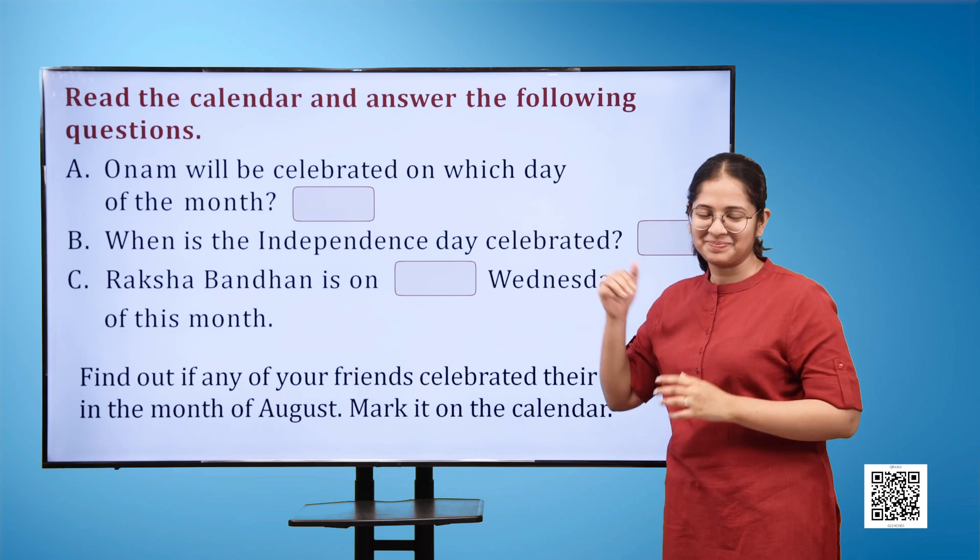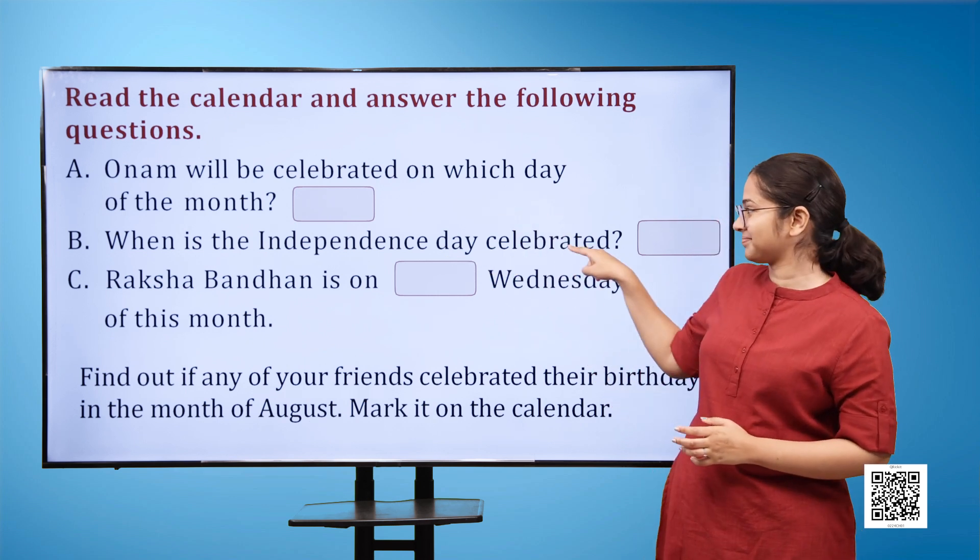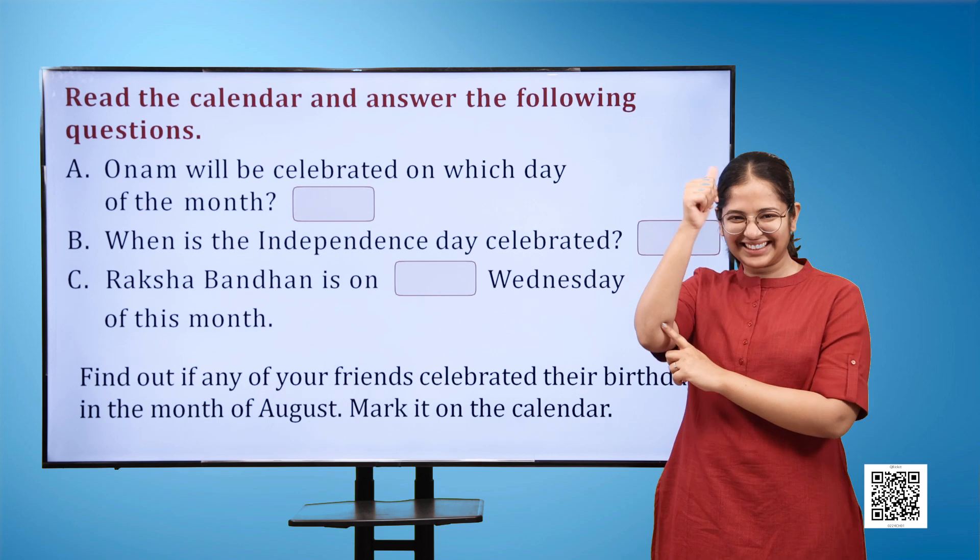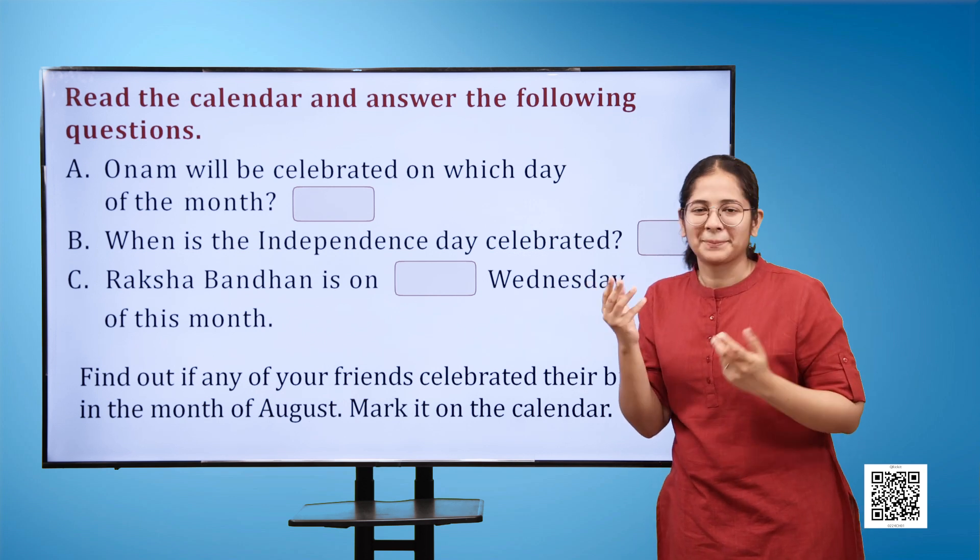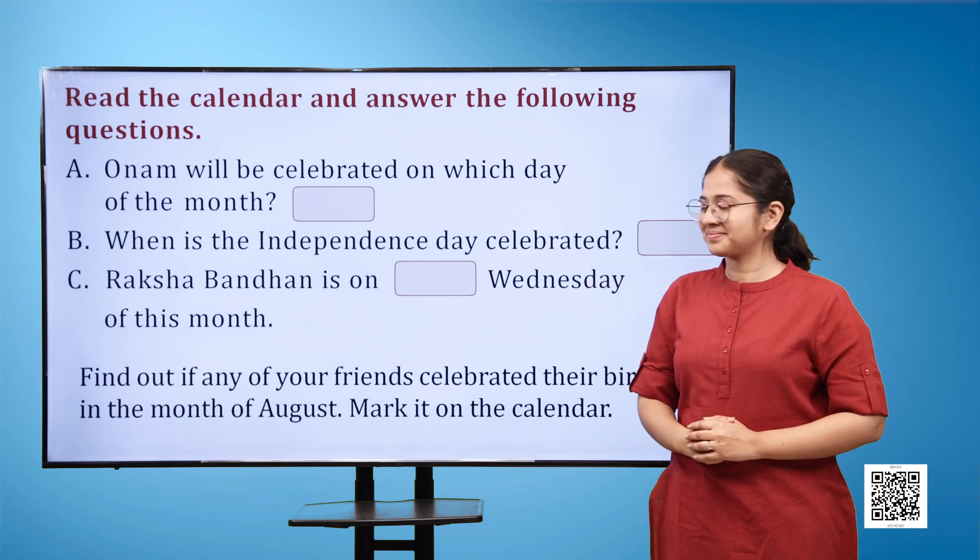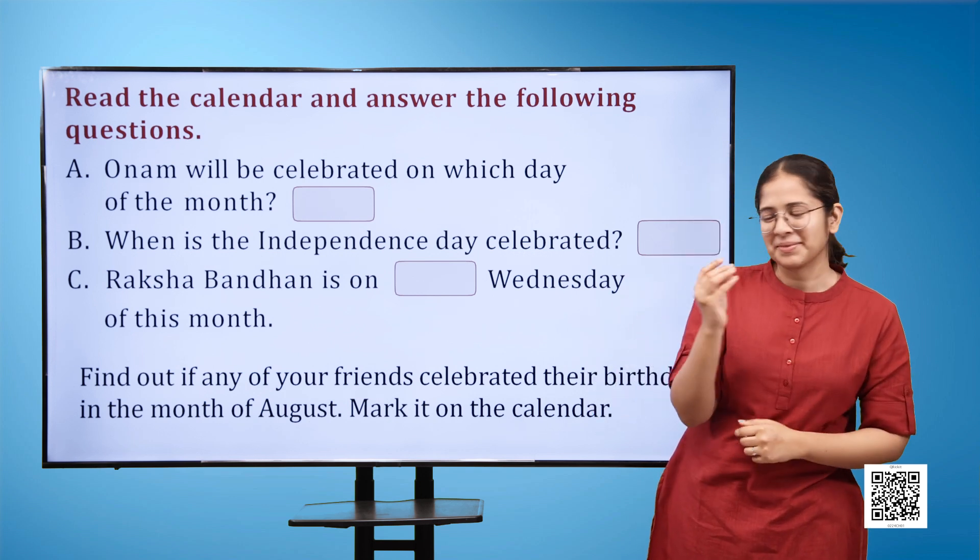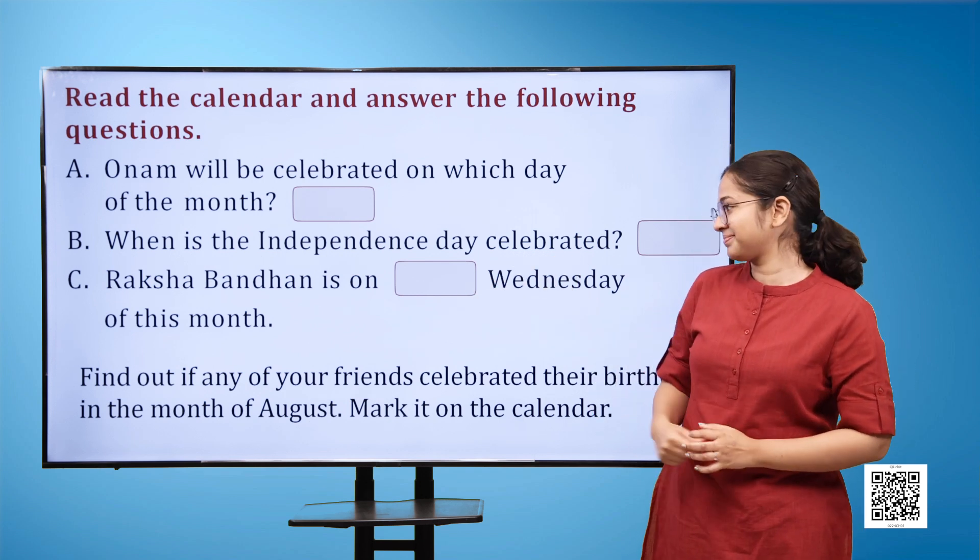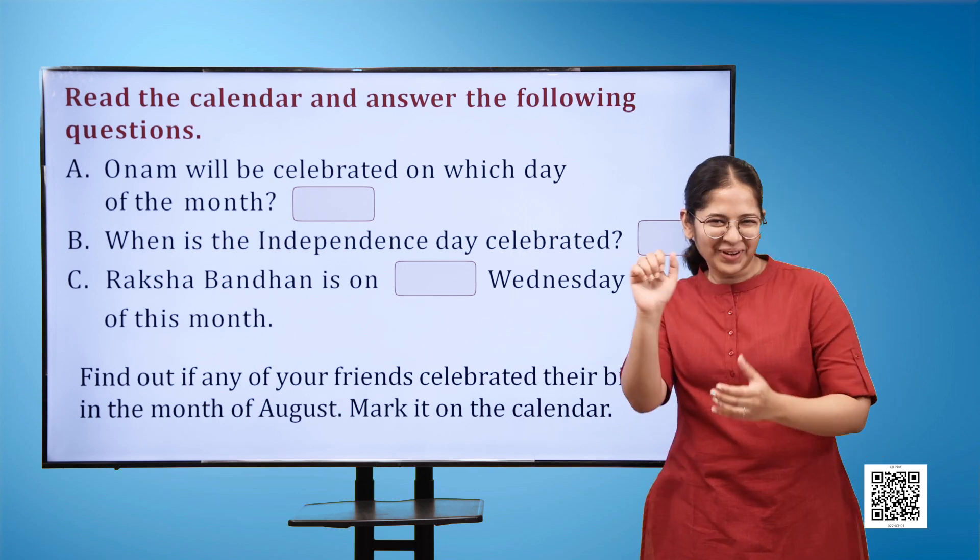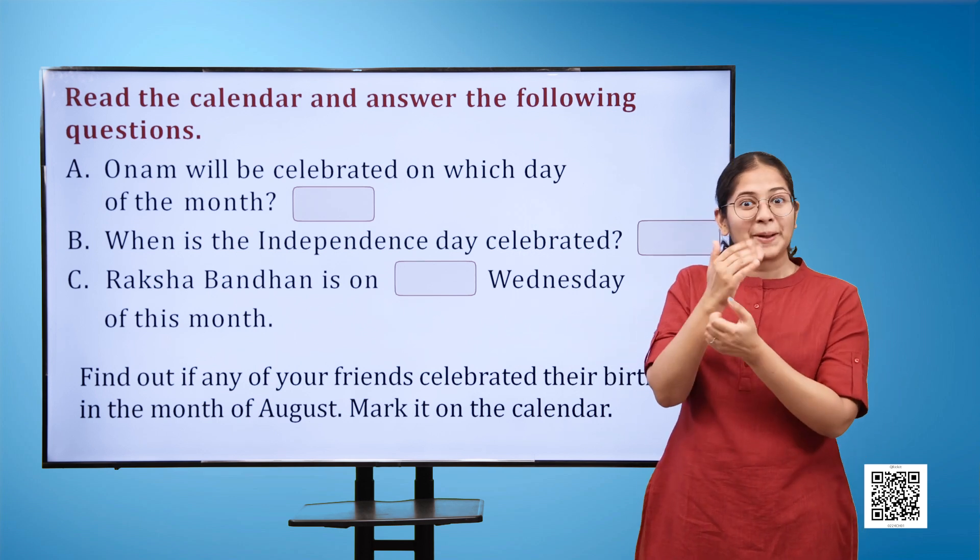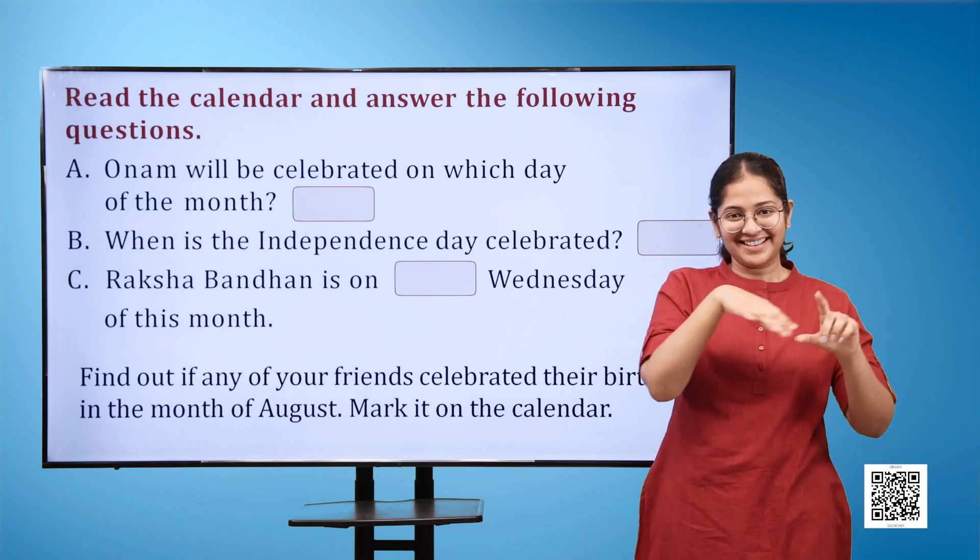Read the calendar and answer the questions. A) Onam will be celebrated on which day of the month blank. B) When is the Independence Day celebrated blank. C) Raksha Bandhan is on blank Wednesday of this month. Find out if any of your friends celebrated their birthday in the month of August. Mark it on the calendar.